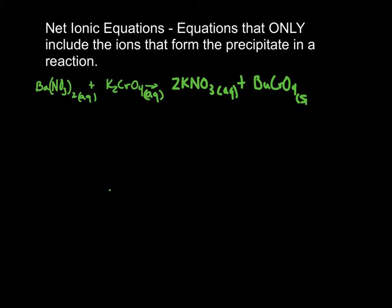In our first example, barium nitrate and potassium chromate combined to produce potassium nitrate as an aqueous solution and barium chromate as a precipitate. Now, a net ionic equation is an equation that includes only the ions that come together to form the precipitate.